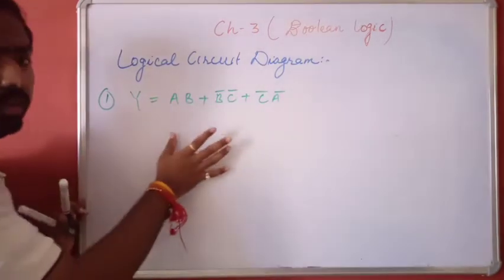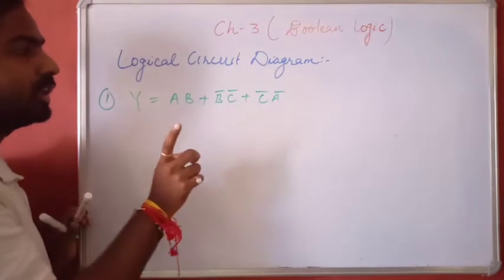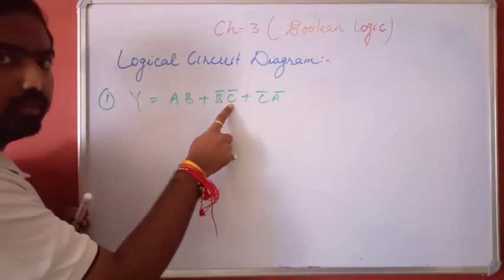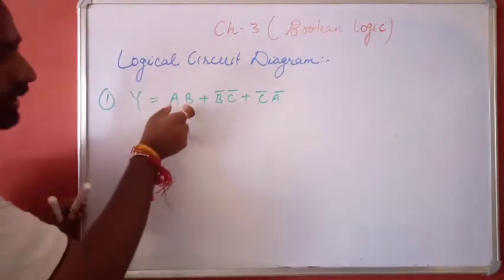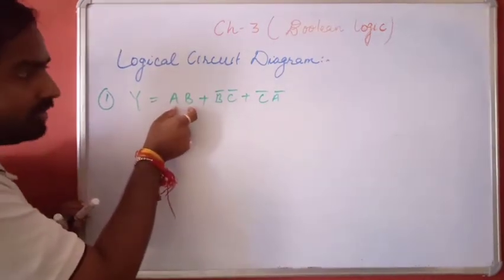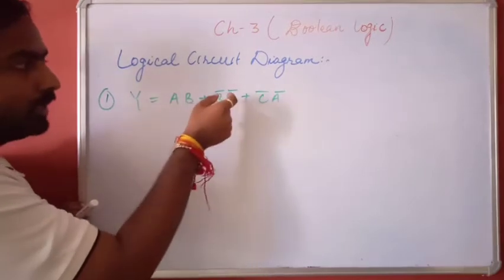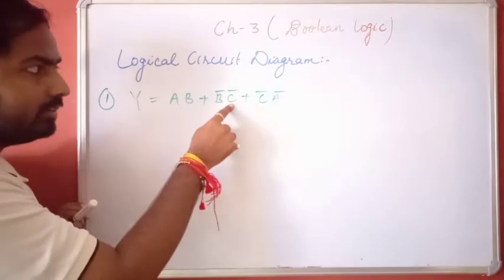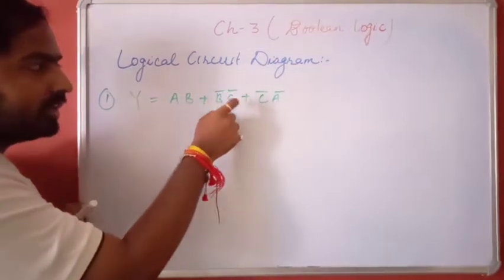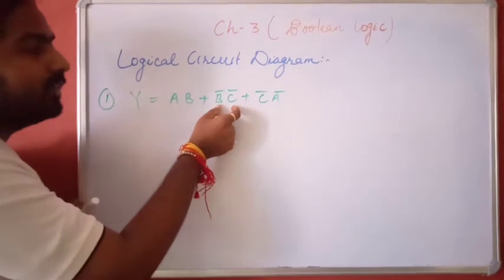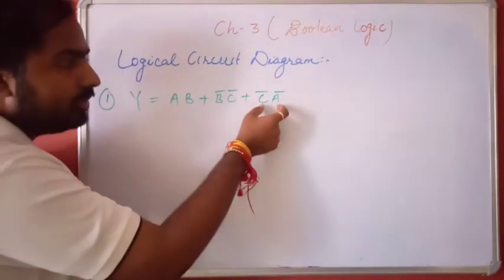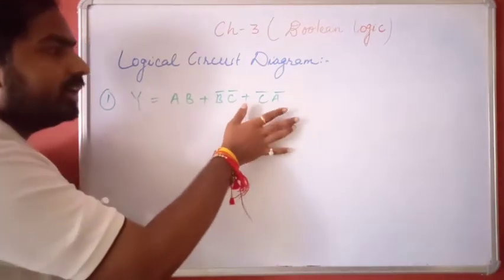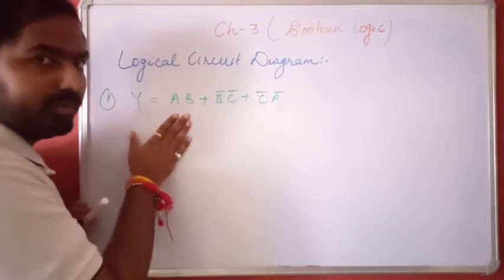First of all you have to understand: here 3 inputs are there, means 3 variables — A, B and C. In A and B, AND operation is there. In B, first of all NOT operation is there. In C, first of all NOT operation is there. After that AND operation is there between B̄C̄. Here also in C̄Ā, AND operation is there, and after that in all, OR operation is there. That we have to implement.